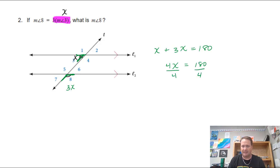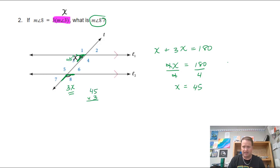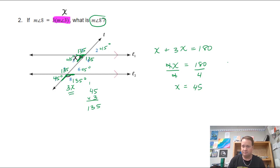Combining like terms gives 4x equals 180. Dividing both sides by 4, x equals 45 degrees. So angle three is 45 degrees, and angle eight is three times that — 45 times 3 equals 135 degrees. Now I know every angle: all the acute angles are 45 degrees and all the obtuse angles are 135 degrees.